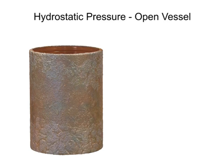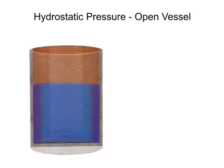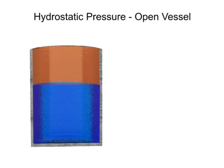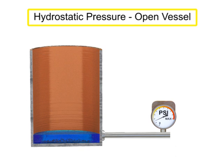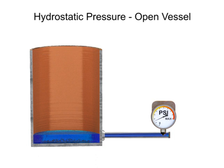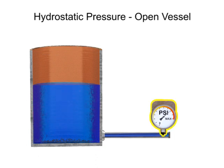The pressure exerted by a fluid material in a vessel is directly proportional to its height multiplied by its density. Hydrostatic pressure, or head pressure, is the force produced by a column of material. As the height of the material changes, there is a proportional change in pressure.